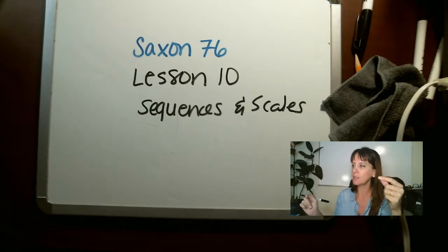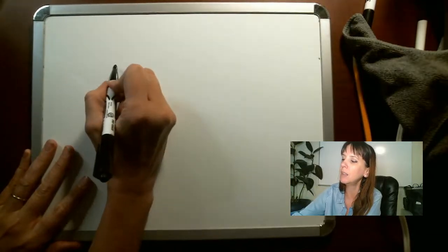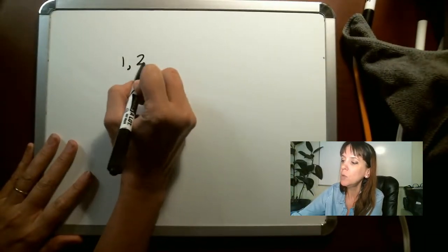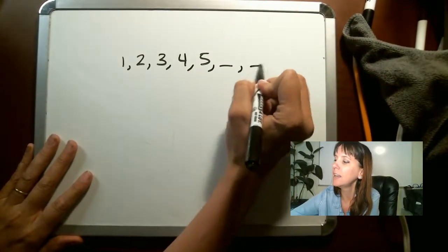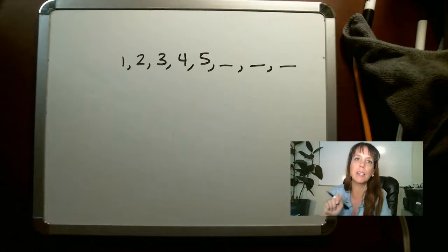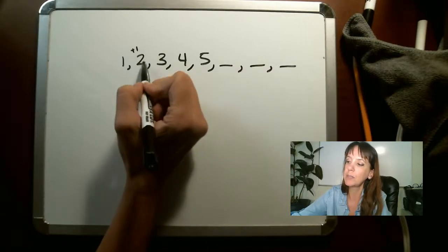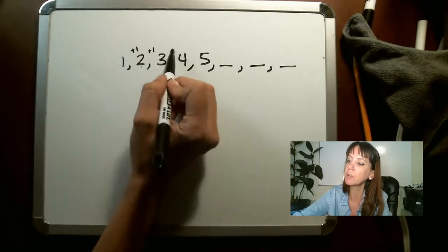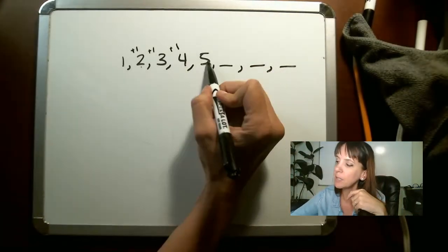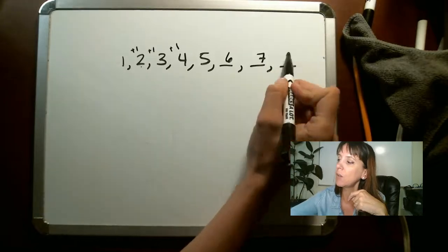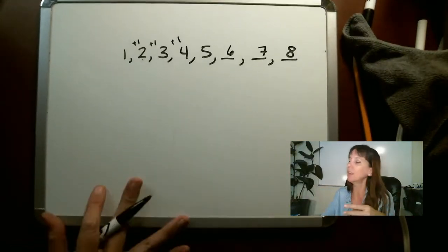We're going to talk about sequences and scales. Sequences you may be familiar with — you've probably seen things like this. Let's say we've got one, two, three, four, five, and then it says find the next three numbers in that sequence. Well, one plus one gives us two, two plus one gives us three, three plus one gives us four — we're adding one each time. So six, seven, eight.